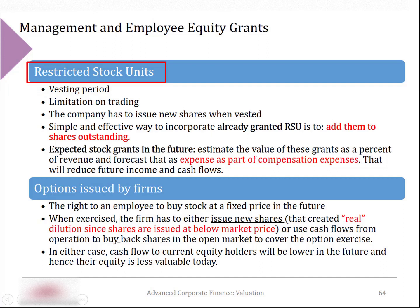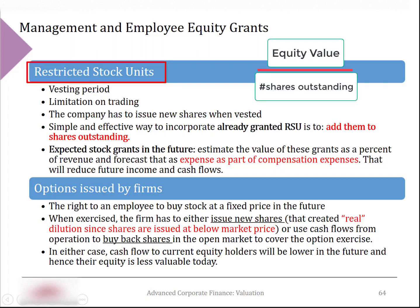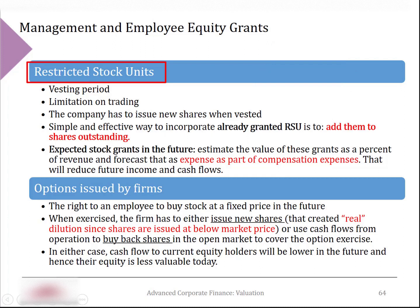While companies do have to report unvested stock grants in their filings, and while these unvested stocks do represent claims on firm equity, they are not part of shares outstanding. Therefore, if you simply divide the equity value by the number of shares outstanding while there are existing RSUs, you would overestimate the value per share for common shareholders. Since the firm has to issue new shares when granted stocks are vested, the best and easiest way to deal with RSUs is to consider them as part of the shares outstanding.